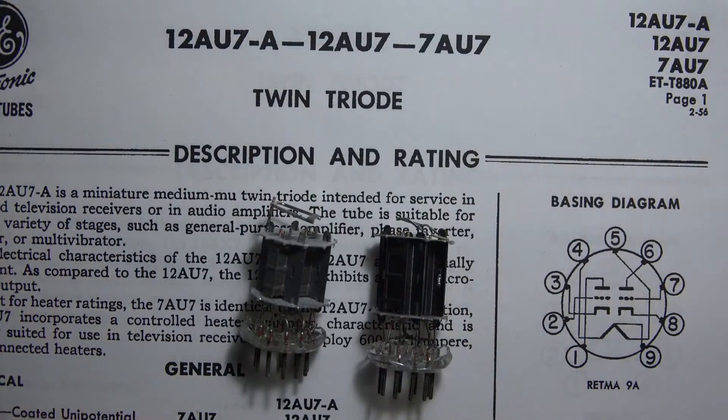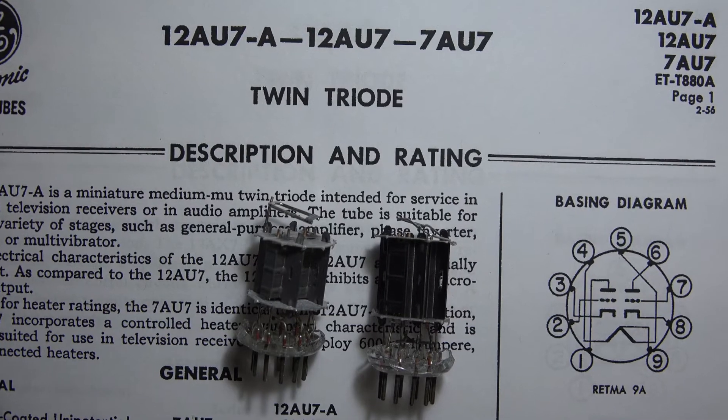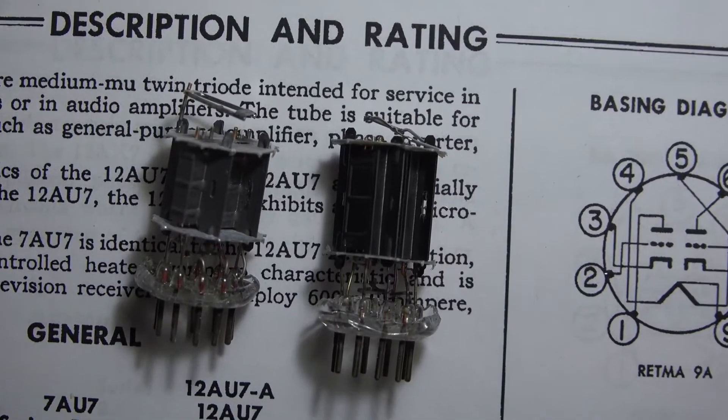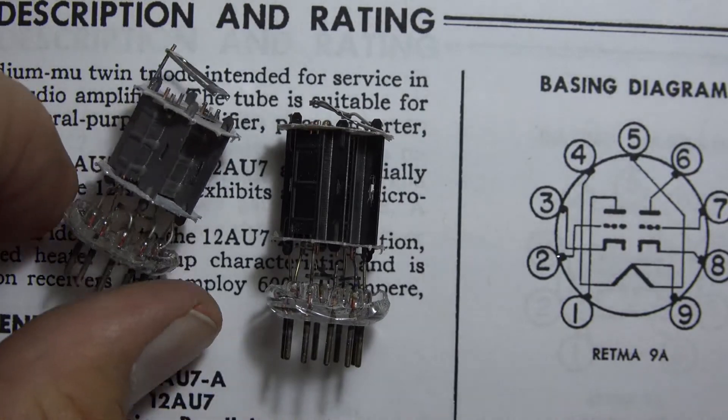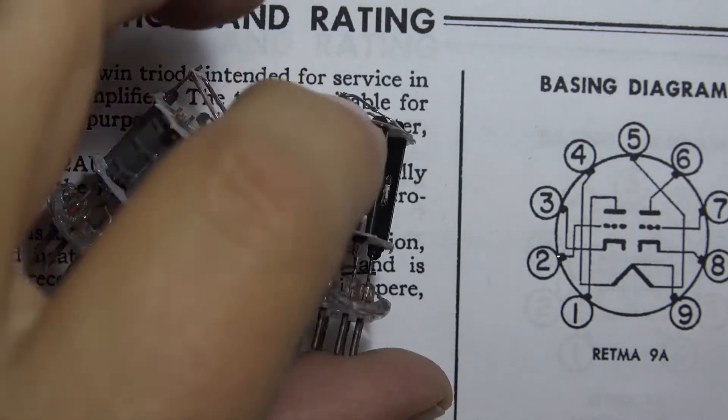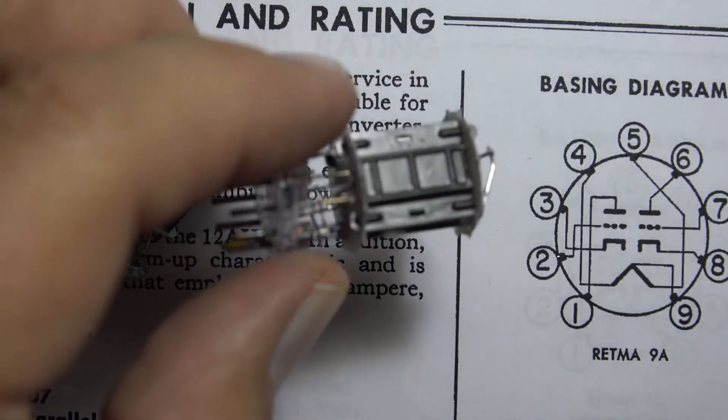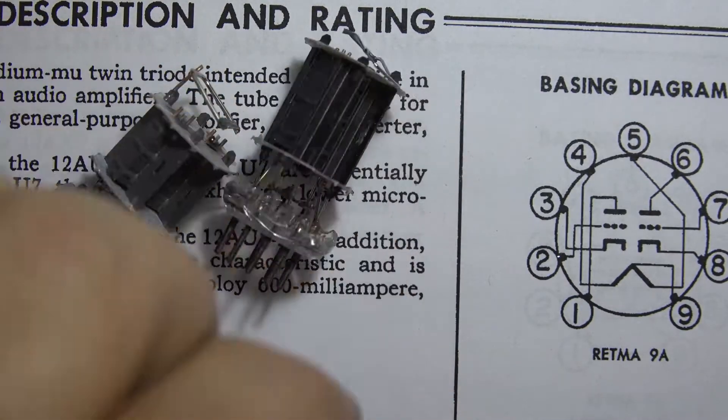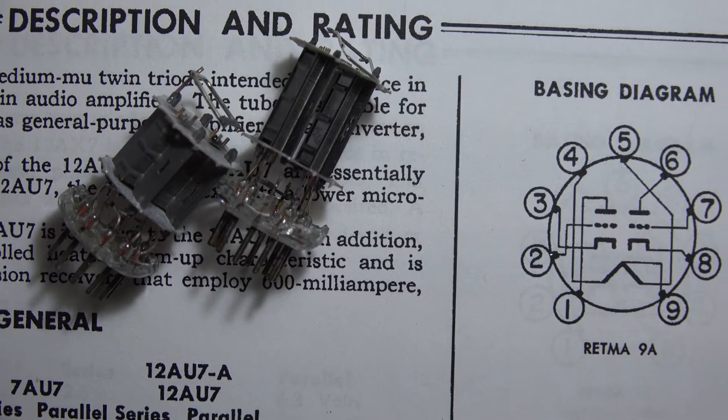Here's the sheet for 12AU7, which is a twin triode, and I have them both here, 12AU7 and a 12AX7. Let's take a look at these in greater detail.